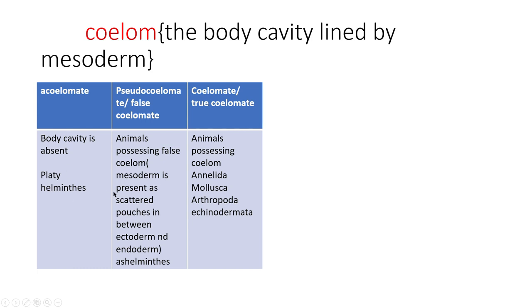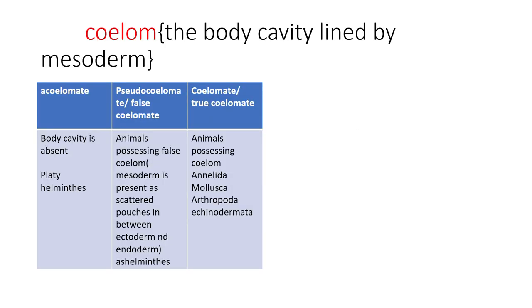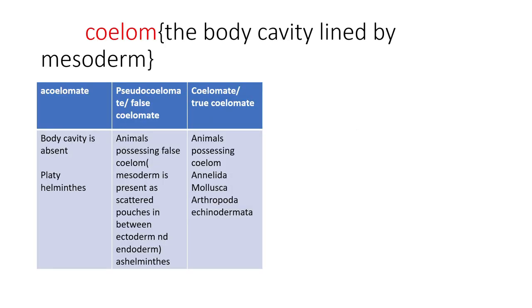For your exam, focus on three key points: symmetry, germ layers, and coelom. You should be able to give correct examples for each phylum.